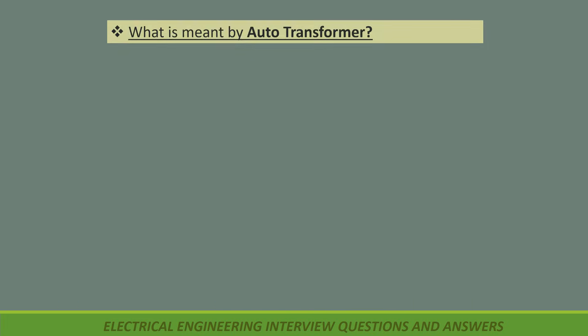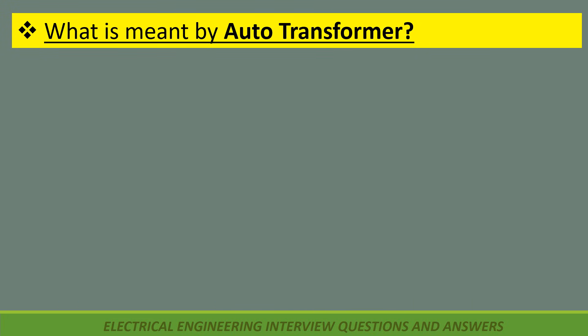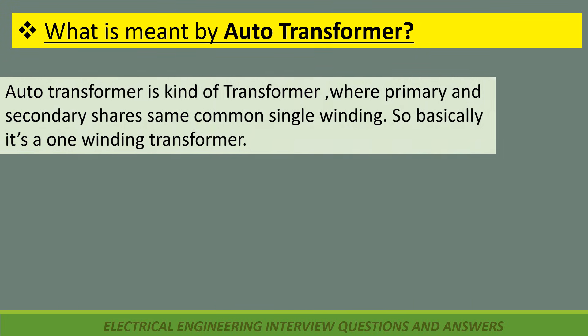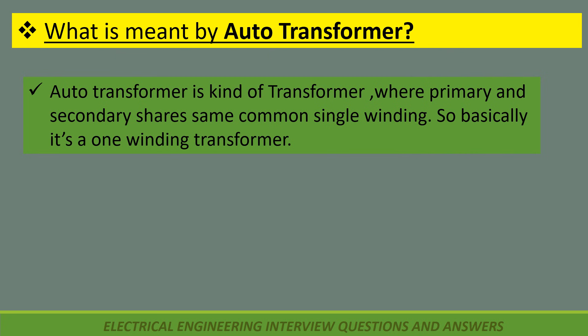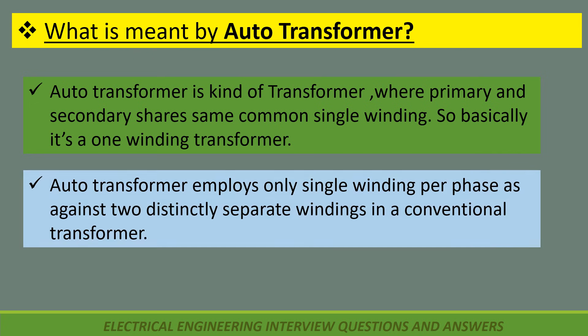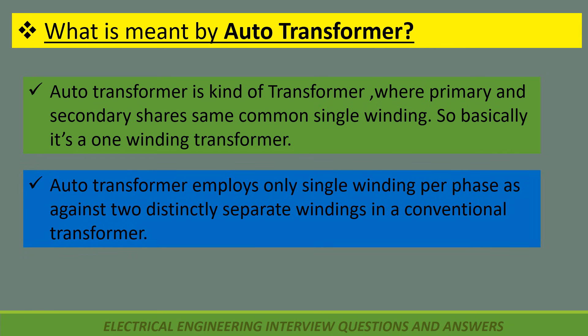What is meant by autotransformer? An autotransformer is a kind of transformer where primary and secondary share the same common single winding. So basically it is a one winding transformer. Autotransformer employs only a single winding per phase, as against two distinctly separate windings in a conventional transformer.